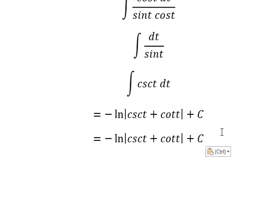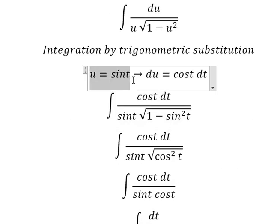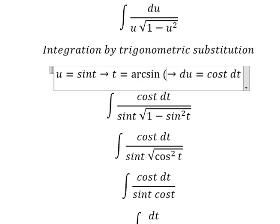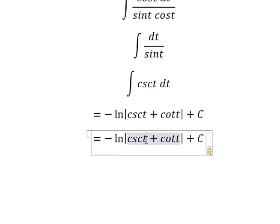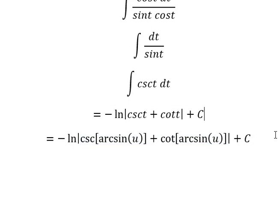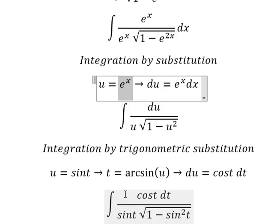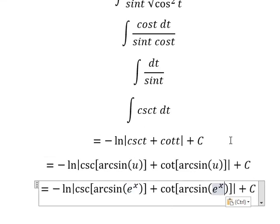Now I will put C, and for t, since t equals sin⁻¹(u), we need to change t back in terms of u. I will substitute this expression in to change for t, and this expression to change for t as well.